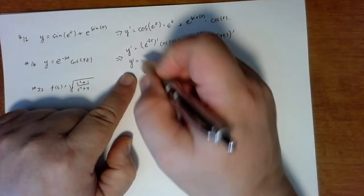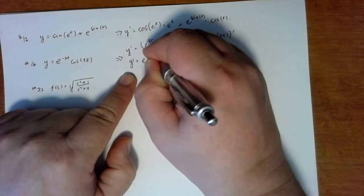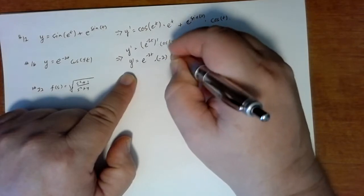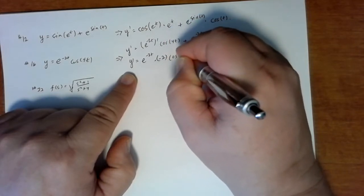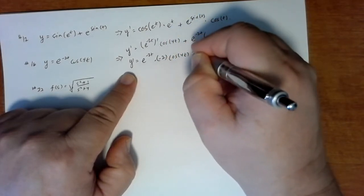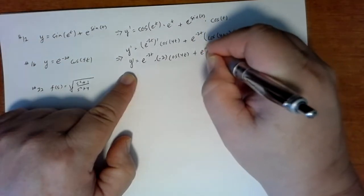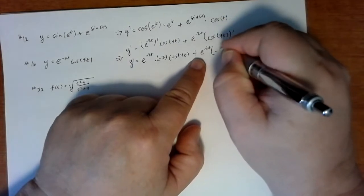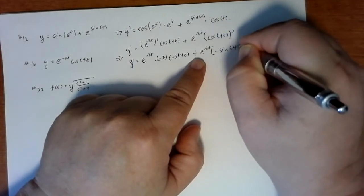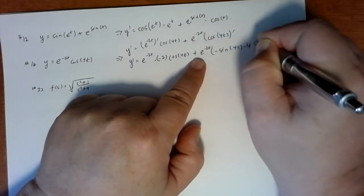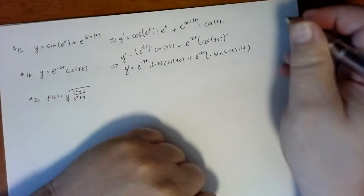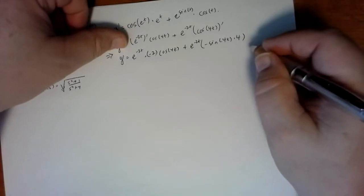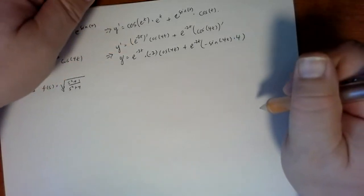The cosine of 4t just comes down, and then we'll have our plus e to the minus 2t and then minus sine of 4t times 4. We could simplify that a little by factoring out the exponential, but for now you could leave your answer in this form.